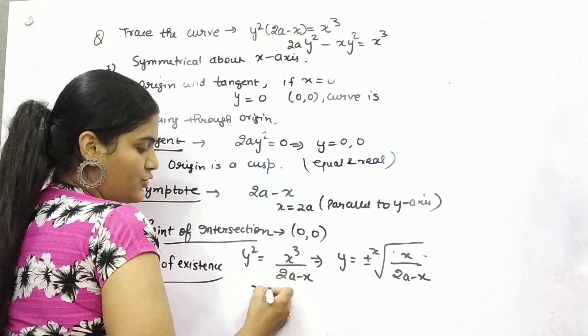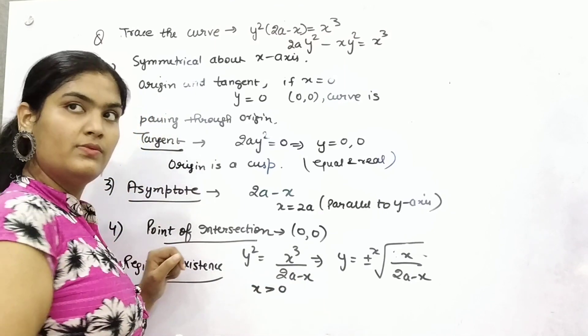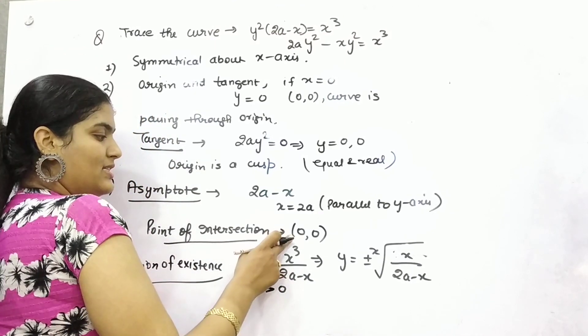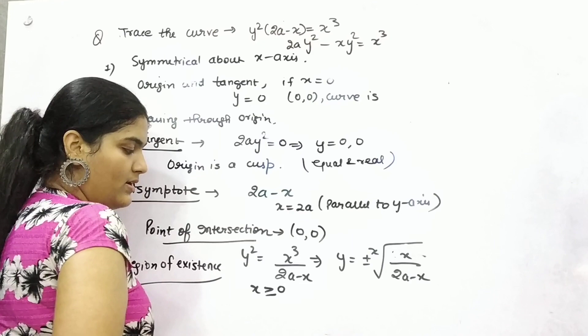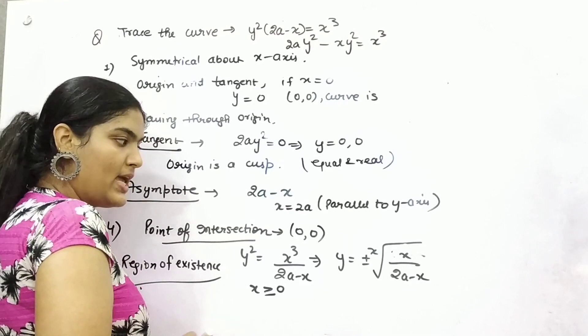So x should always be greater than 0. Or because it is passing through origin, it can be equal.